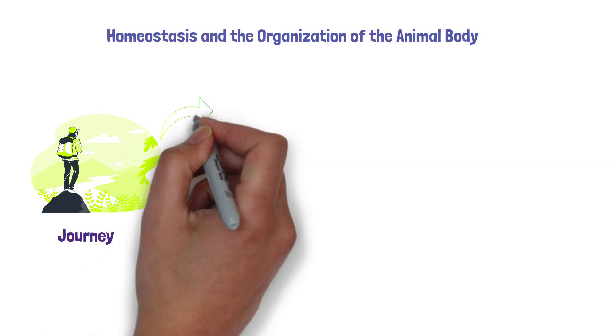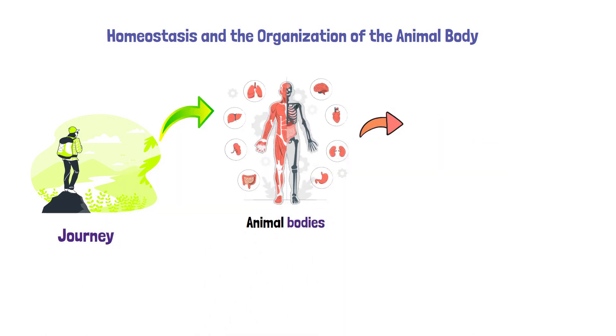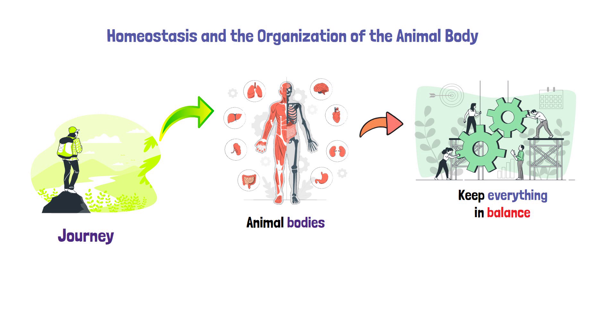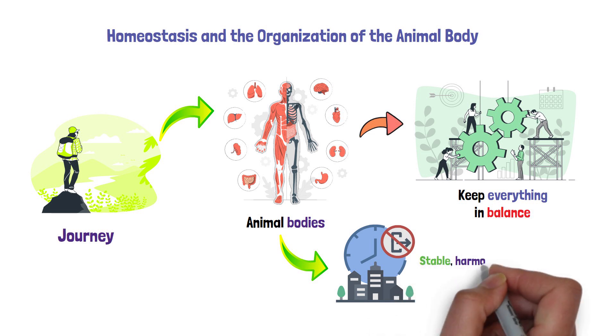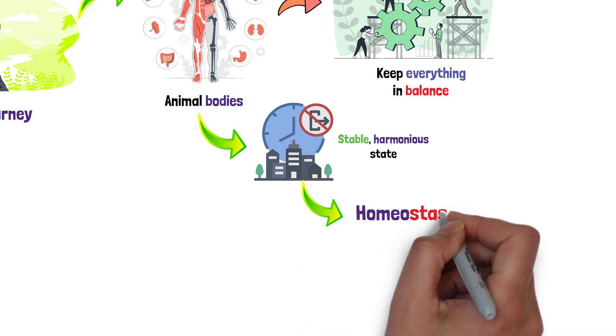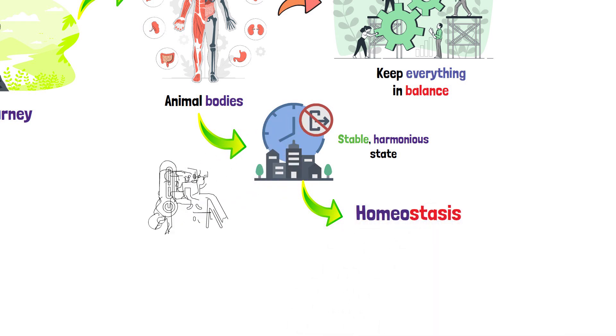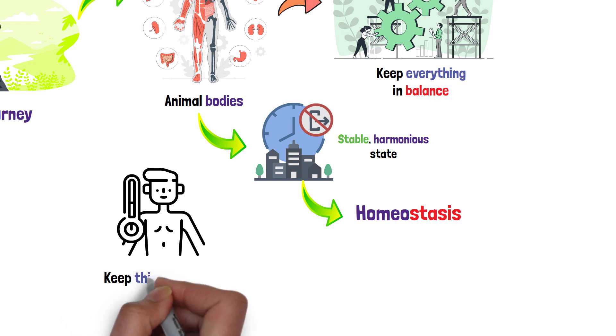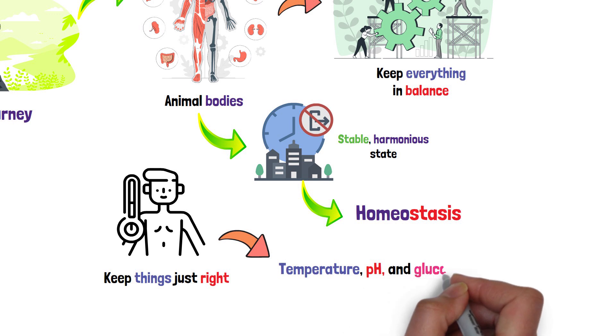Homeostasis and the organization of the animal body. Let's take a fascinating journey into the world of animal bodies, focusing on the intricate workings that keep everything in balance. Think of your body as a city, constantly buzzing with activity, working tirelessly to maintain a stable, harmonious state. This balancing act is known as homeostasis. It's like having a thermostat in your body that's always adjusting to keep things just right, ensuring that internal conditions like temperature, pH, and glucose levels stay within a safe range.